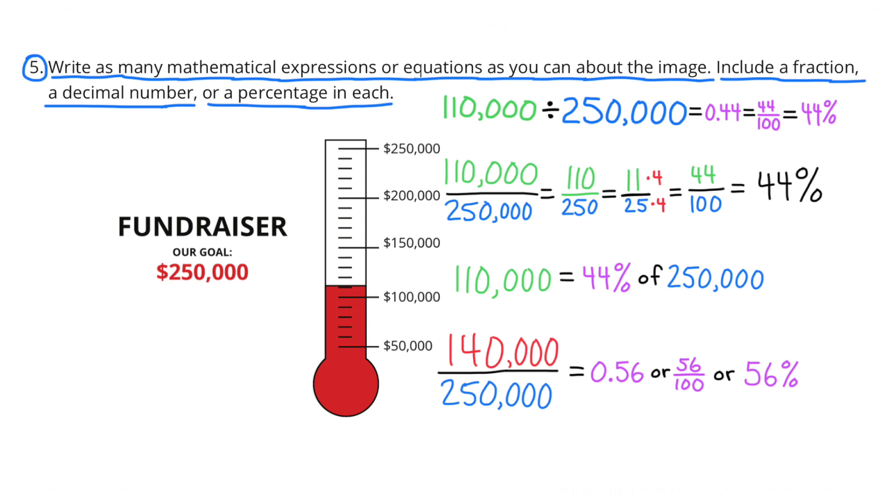In order to reach their goal, they still need to raise $140,000. And 140,000 divided by 250,000 is 0.56 or 56 hundredths. They still need to raise another 56% of their goal in order to reach their goal.